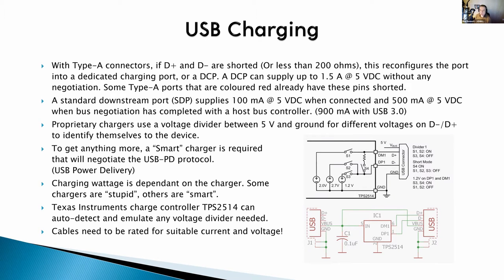Without D- and D+ shorted together, you'll get 100 milliamps of current. When the peripheral negotiates with the host, you can get up to 500 milliamps. With USB 3.0 that goes up to 900 milliamps. A lot of proprietary charging adapters have a voltage divider between 5V and ground to provide different voltages across D- and D+ to identify the device and change the charging current available. So Apple chargers provide a different voltage divider than a Samsung charger, and so on.